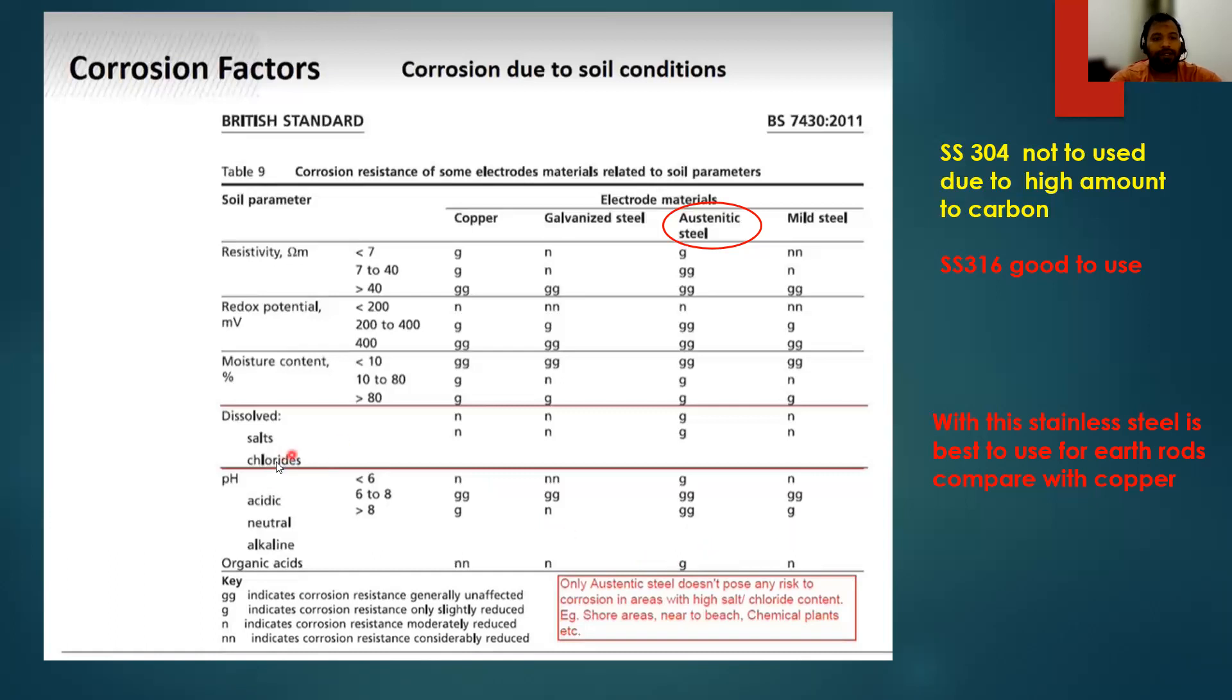If there are dissolved salts and chlorides, what will happen? Copper indicates corrosion resistance moderately reduced, galvanized steel also moderately reduced, austenitic steel slightly reduced, and mild steel moderately reduced. If moisture content is less than 10%, then copper is very good unaffected, galvanized steel unaffected. If moisture content is 10 to 80%, then copper slightly reduced, galvanized steel moderately reduced,